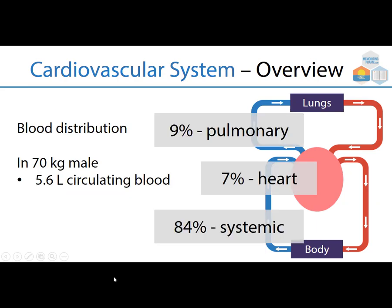When talking about the pulmonary system, only a very small amount of blood is there — it's not as much of a pressure system because the lungs and heart are right next to each other. Seven percent of blood distribution is in the heart, and 84 percent is throughout the body. In a 70-kilo male, that's about 5.6 liters of circulating blood.